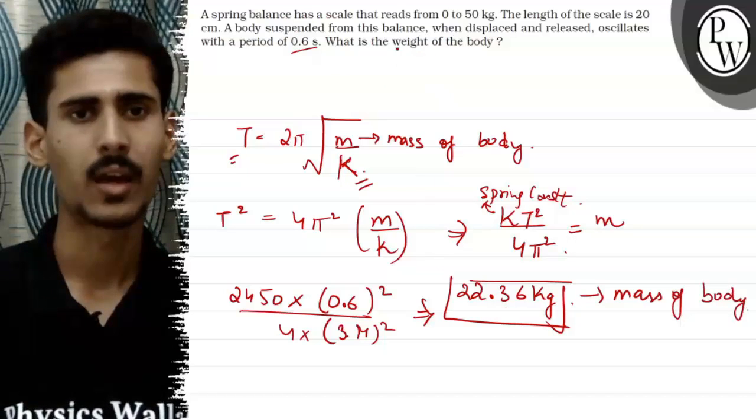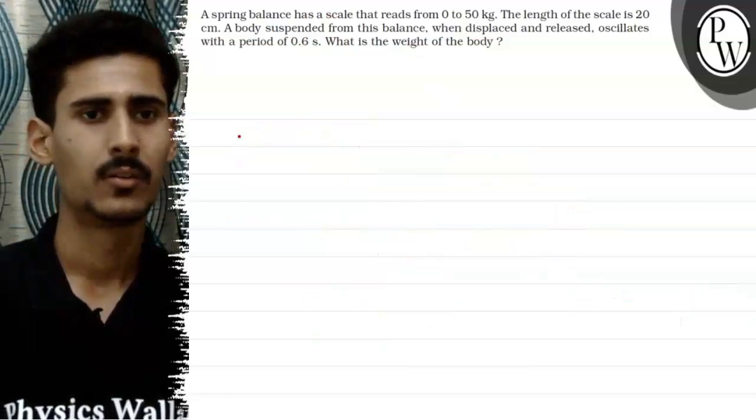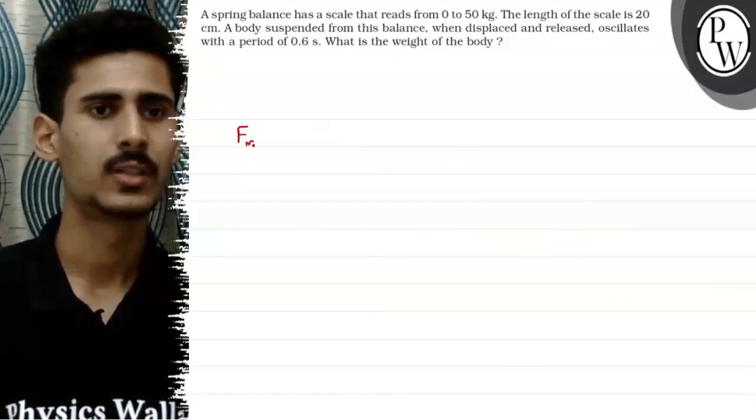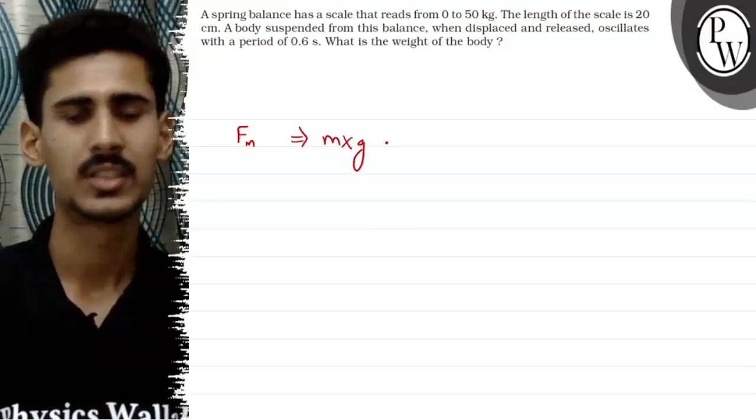But we have to find the weight of this body. So to find the weight, we have to find the force of this small body m. So this will come out to be m into g.